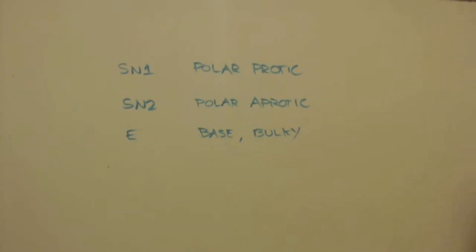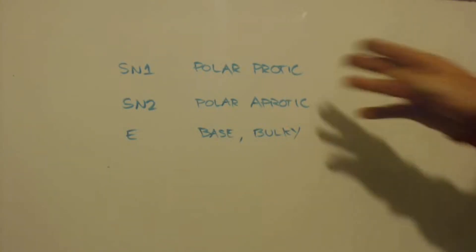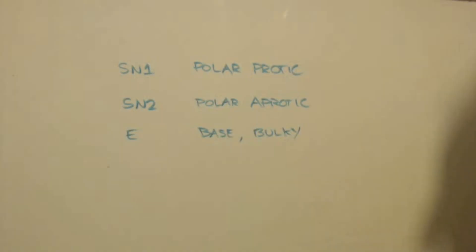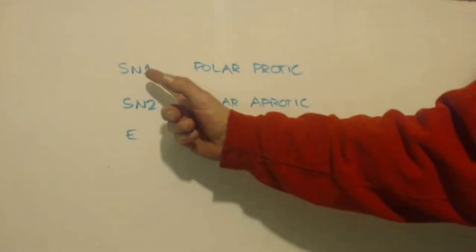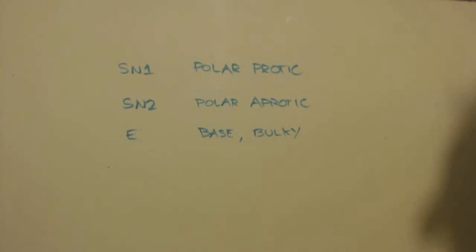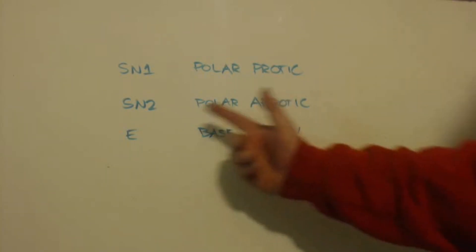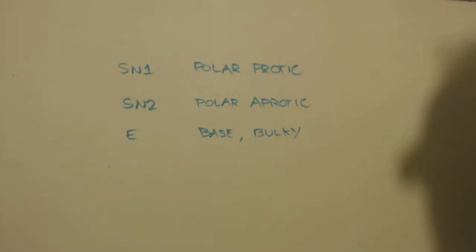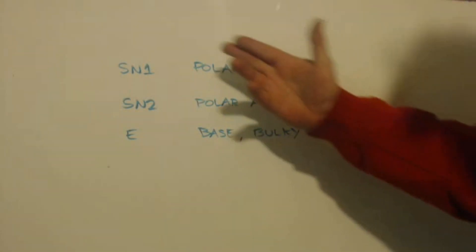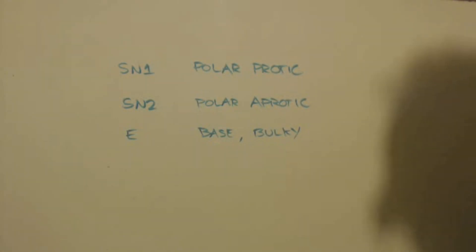One last thing I want to go over with solvents is, solvents do play a big part in what type of reaction you're going to have. Here's just a couple examples. Let's say you had an SN1 and an SN2 reaction. If you use a polar protic solvent, you're pushing the reaction towards an SN1. If you use a polar aprotic solvent, you're pushing it to be an SN2. The SN1 is the one with the carbocation. So the protic, the protons are going to help stabilize that carbocation.